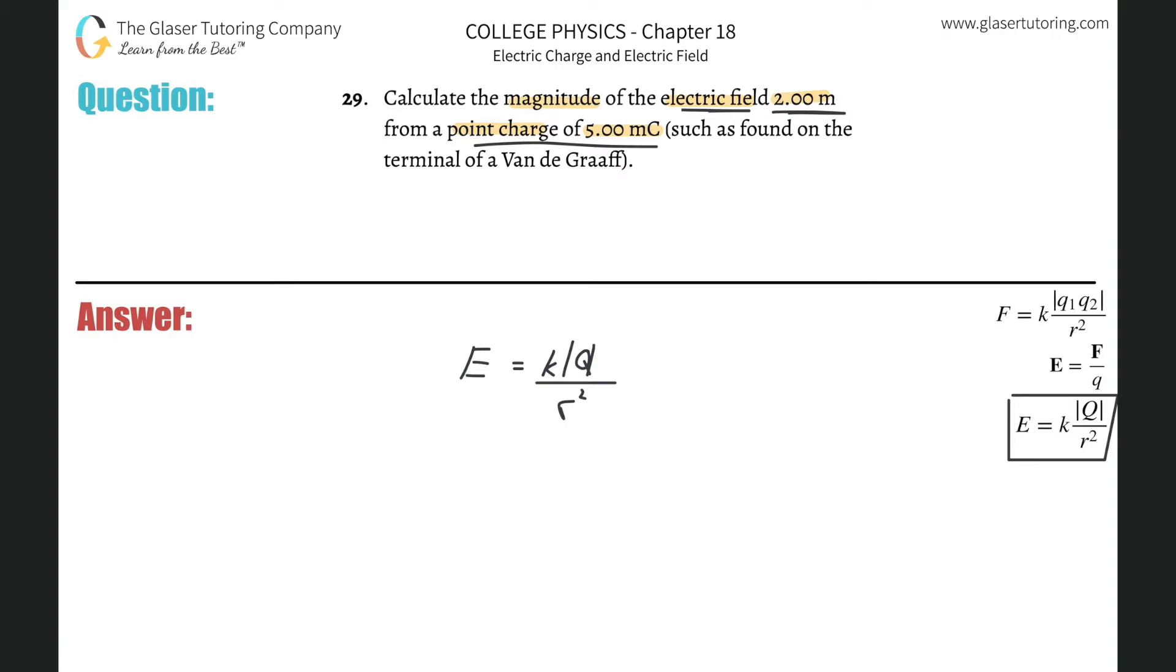In other words, if I have a particular charge - let's say it's positive - we know the electric field lines point away from positive charges. I can find the electric field that is produced at a certain distance relative to that positive charge.